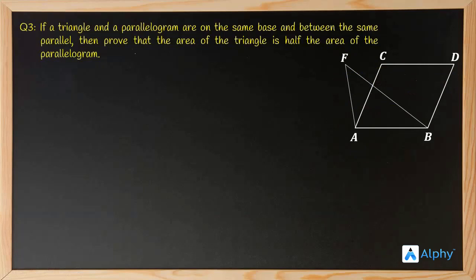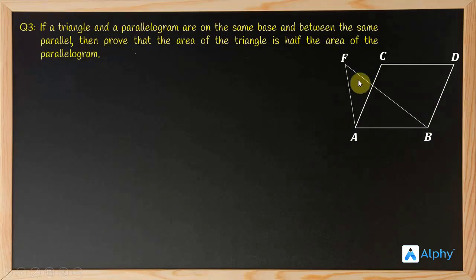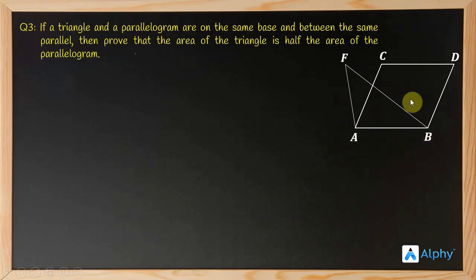Do you think it's right? Yes, it is right — because the area of this parallelogram is given as base into height, and the area of this triangle is given as half into base into height. You can see both have the same height because they are lying between the same parallels, and they also have the same base.